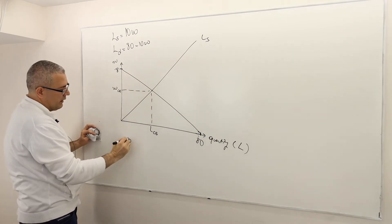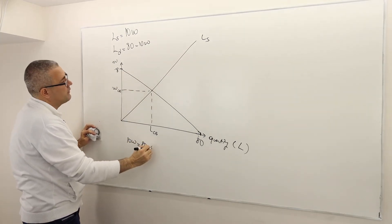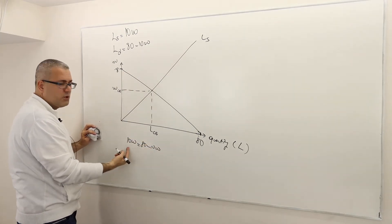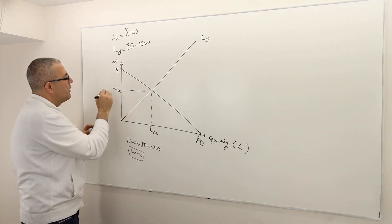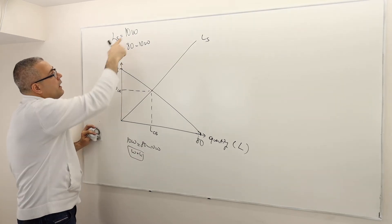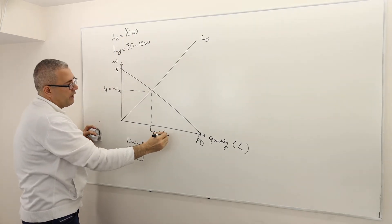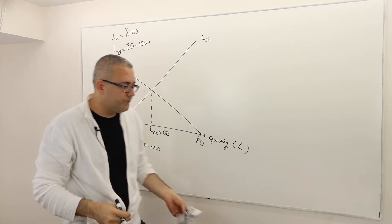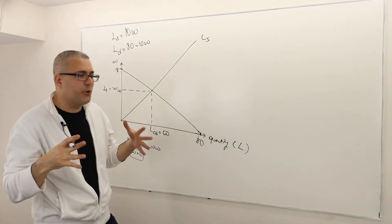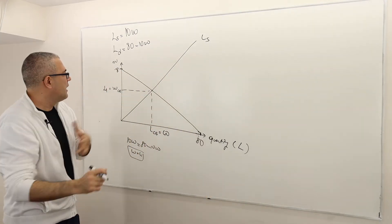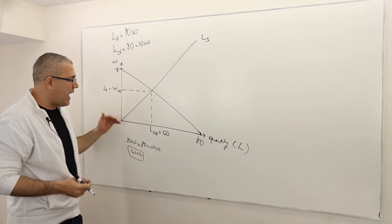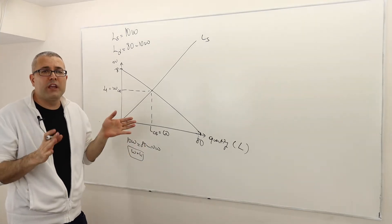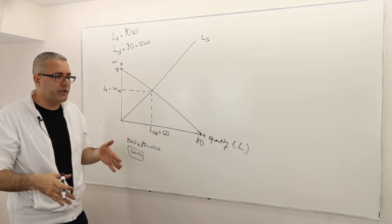So how can I find that? Well, very simple. 10W is equal 80 minus 10W. So if you solve this, 20W is equal to 80. So that means W is equal to 4. So that's 4. And therefore, this is 40. So before, in this perfectly competitive market, the minimum wage should be $4. And there's going to be 40 workers who will be actually working.